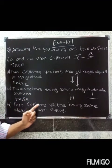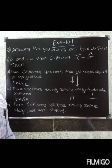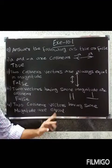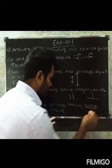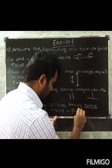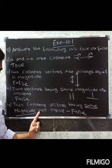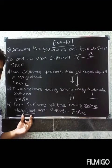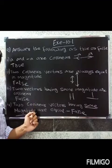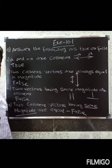Next, the fourth question: two collinear vectors having the same magnitude are equal. Two vectors are equal when they have the same magnitude and the same direction. So the answer is false.